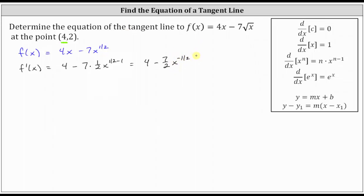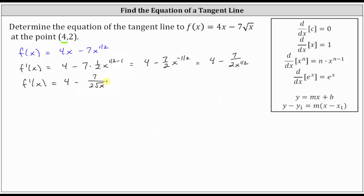Let's write this using a positive exponent. This is equal to 4 minus 7 divided by the product of 2 and x to the power of positive 1/2. We can also write x to the power of 1/2 as the square root of x. So we will use the derivative in the form f'(x) = 4 minus 7 divided by the product of 2 and the square root of x.